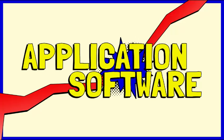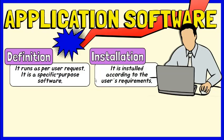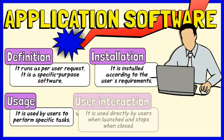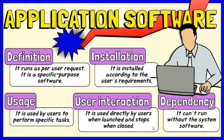Application software is defined as the type of software that runs as per user request. It runs on the platform which is provided by system software. It is known as specific purpose software. It is installed according to the user's requirements and is used by users to perform specific tasks. It starts when we launch it and stops when we close it. It works on the user interface, hence users directly interact with it. Application software cannot run without the presence of system software.